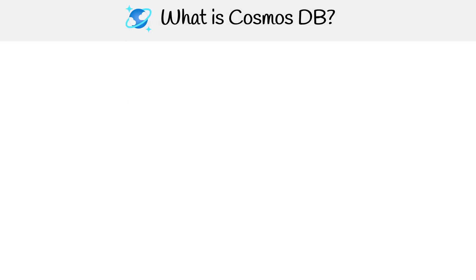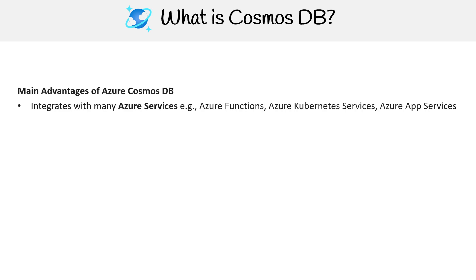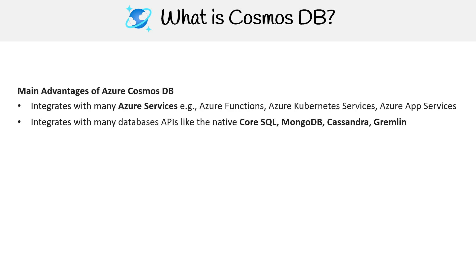Let's talk about some of the main advantages of using Cosmos DB, because Azure really likes you to use it as one of their flagship database products. It integrates with many Azure services like Azure Functions, AKS, and Azure App Services. It also integrates with many different database APIs like Core SQL, MongoDB, Cassandra, and Gremlin.